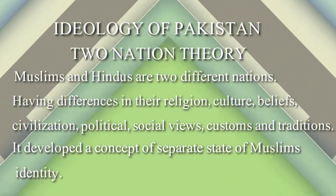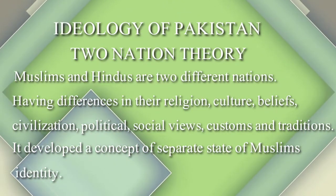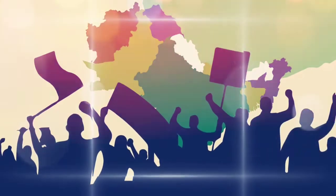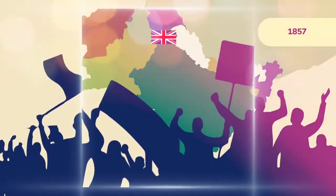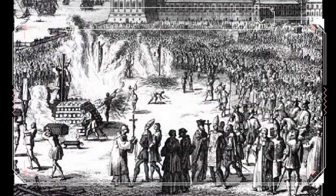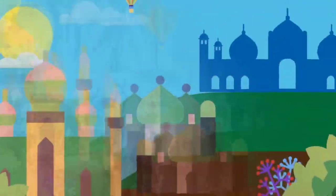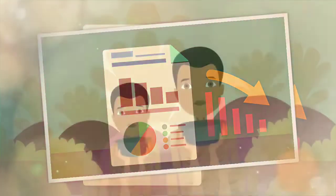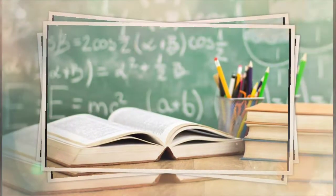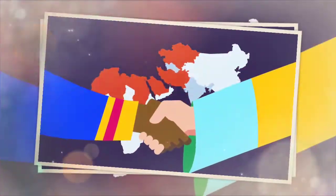Ab hum aate hain do qaumi nazriye ke tarikhi pehlu ki taraf. 1857 ki jang-e-azadi ke baad Angrezon ka rawayya Musalmanon ke saath intahai zalat-amez tha. Musalman samaji, maashi, siyasi, talimi — har lihaz se abtar ho chuke the.